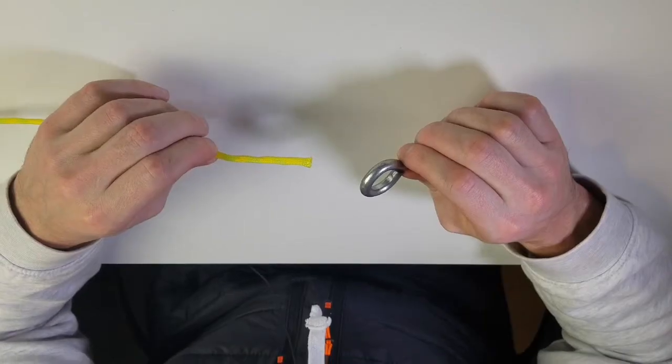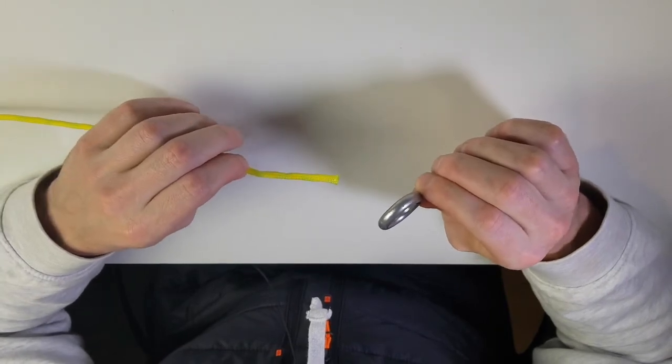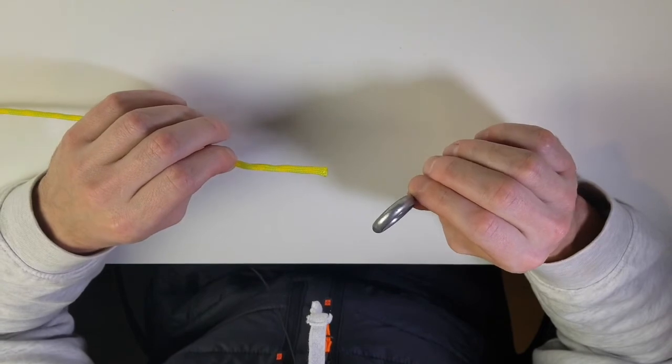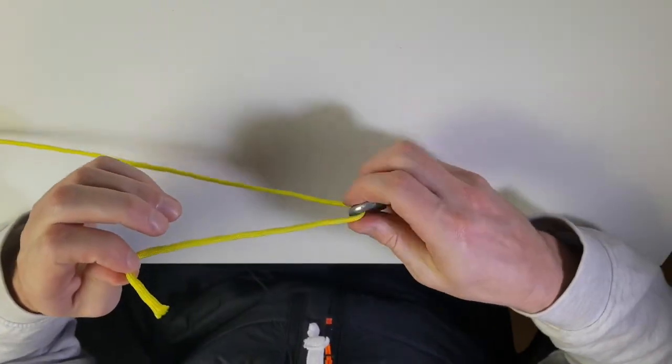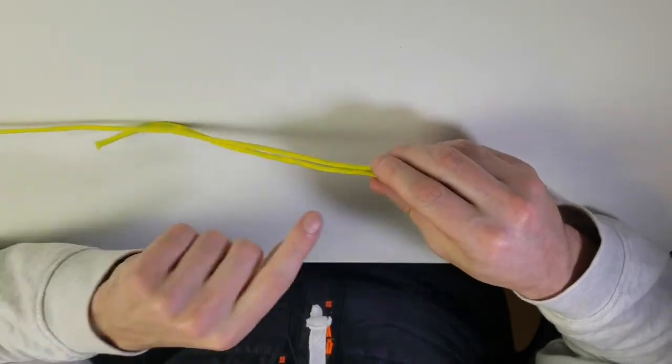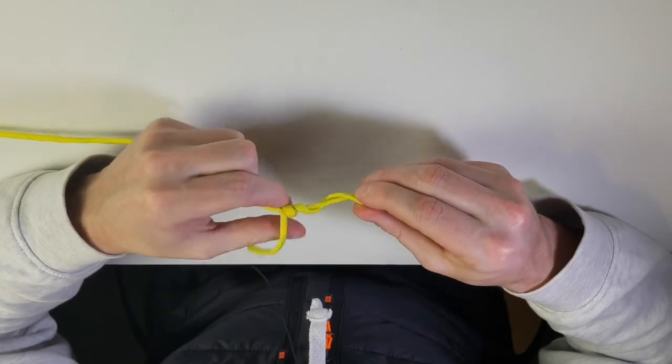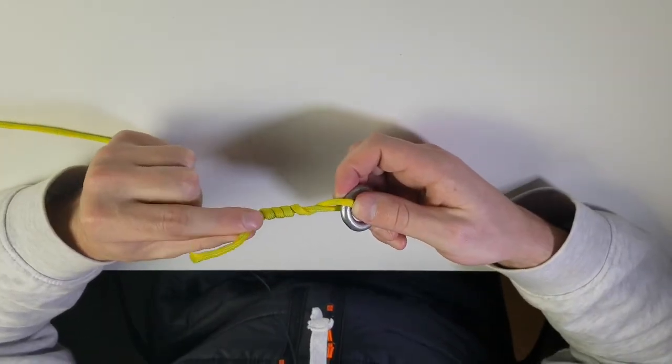Now let's do the improved version. It's exactly the same for the first few steps but there is one additional step at the end that gives it a bit of extra security. You're going to put your line through, double it back just like that, and do the same five to six wraps up: one, two, three, four, five. Then you're going to take your tag end and go back through the circle.